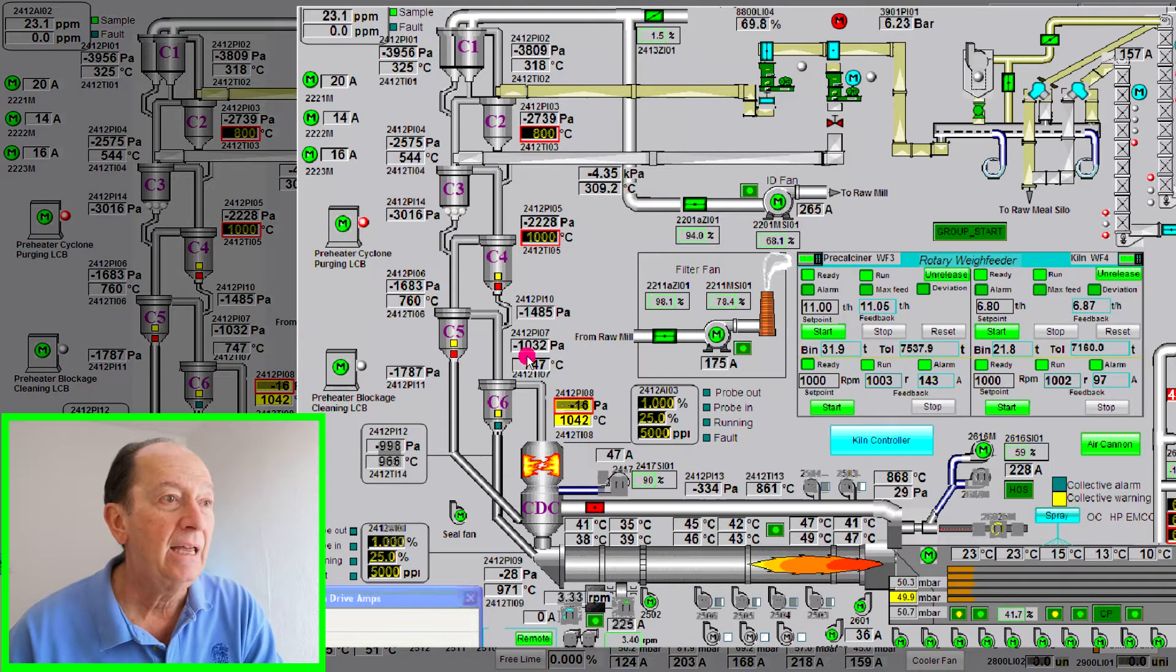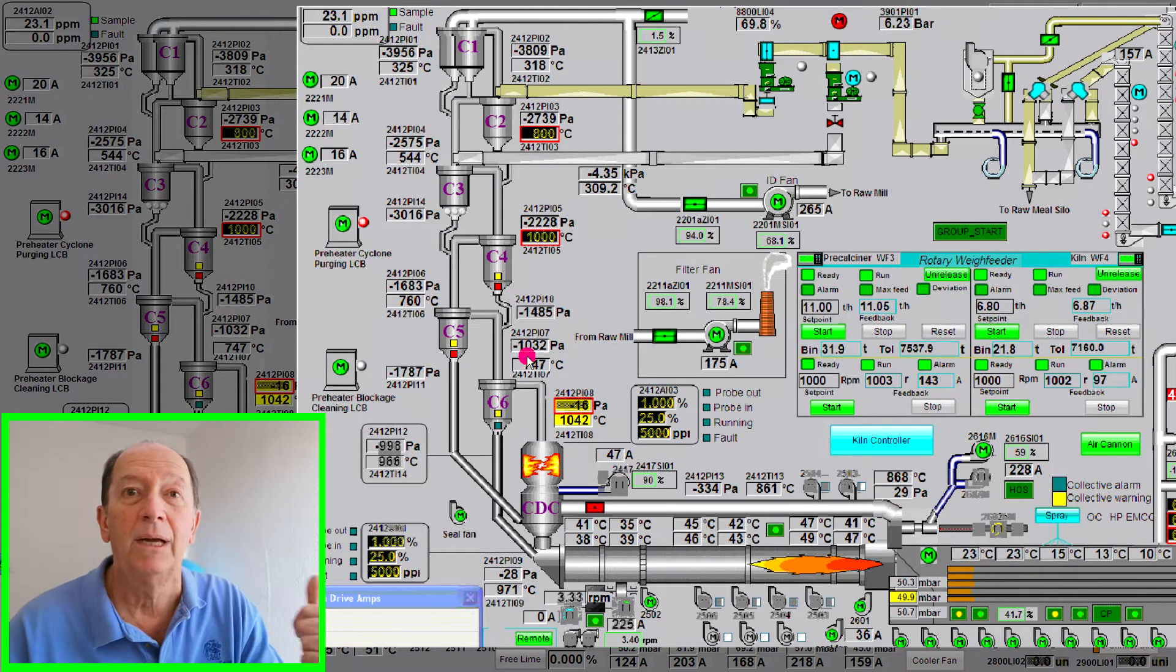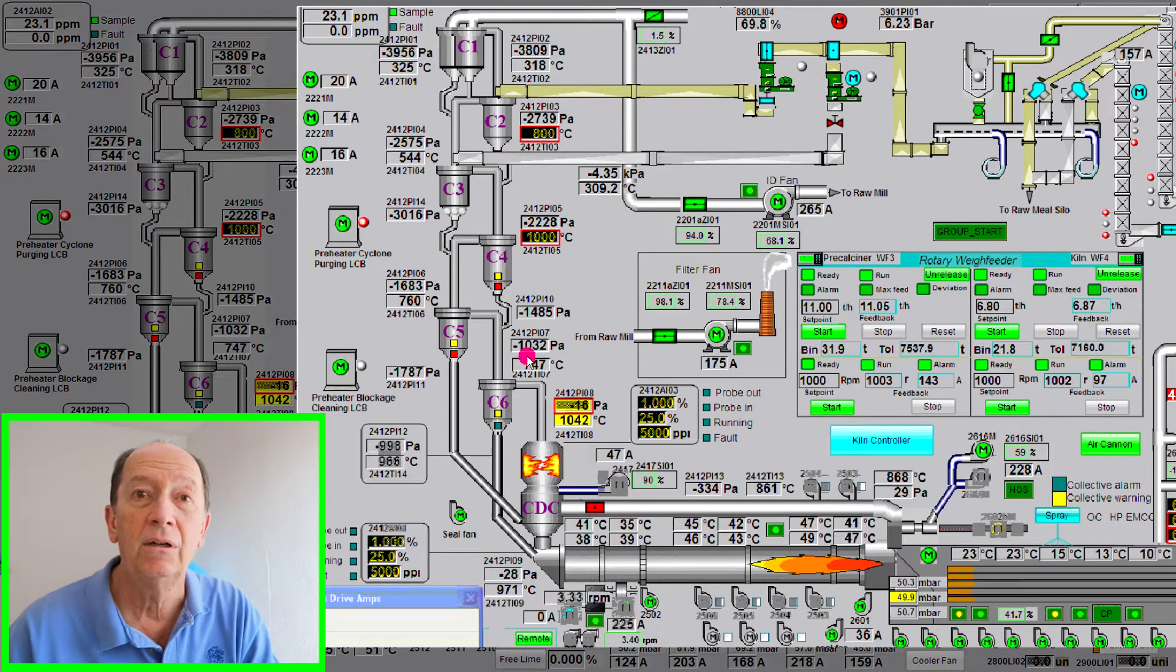If I see hot preheater tower lower than capacity, it's time to increase the feed. So before increasing the feed what do I do? I check what is my oxygen content, what are my burning conditions and then I can see what is my fuel distribution in the system.